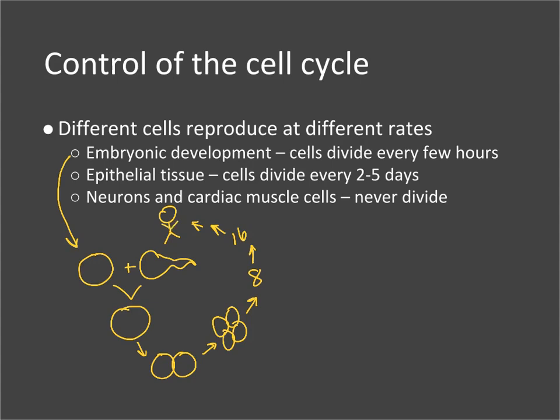Epithelial tissue is found in places like the skin, inside of your mouth, lining your digestive tract, and your respiratory tract. These inside pathways through your body have epithelial tissue on them, and epithelial tissue is designed for wear and tear because it's constantly regenerating itself.